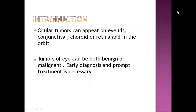Ocular tumors can appear on different parts of the eye like eyelids, conjunctiva, choroid or retina, and in the orbit. These tumors can be benign or malignant. Early detection and prompt treatment is necessary, like any other type of cancer.